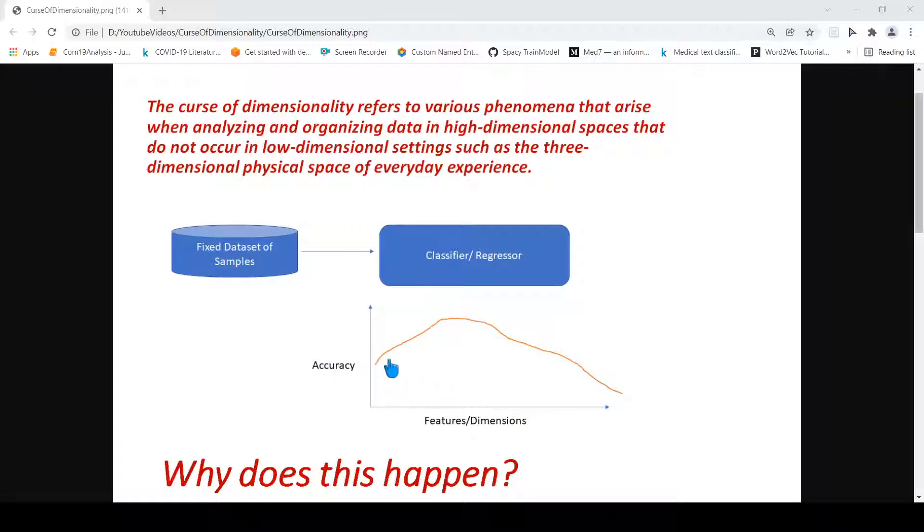Now as you increase the features, say you go to 10 features, you go to 100 features, you go to 1000 features, the sample size is fixed. So as you increase the number of dimensions, the accuracy will increase up to a certain point, and then when the number of dimensions increase the accuracy actually comes down or deteriorates drastically. May not be exactly the way I have shown over here - it depends on your data. This is also known as the peaking phenomenon. The accuracy peaks at a certain number of features and then it goes down.